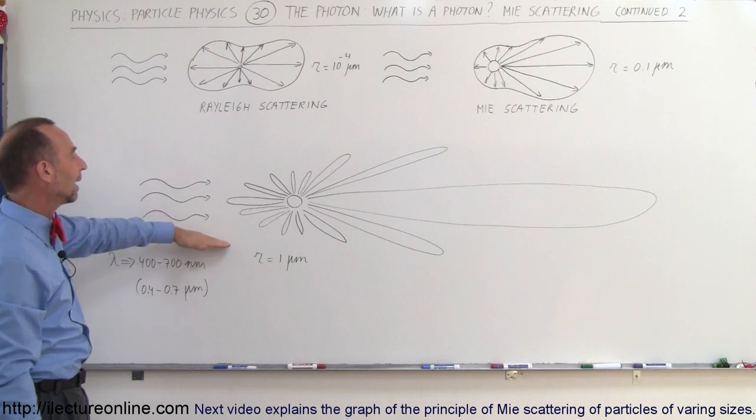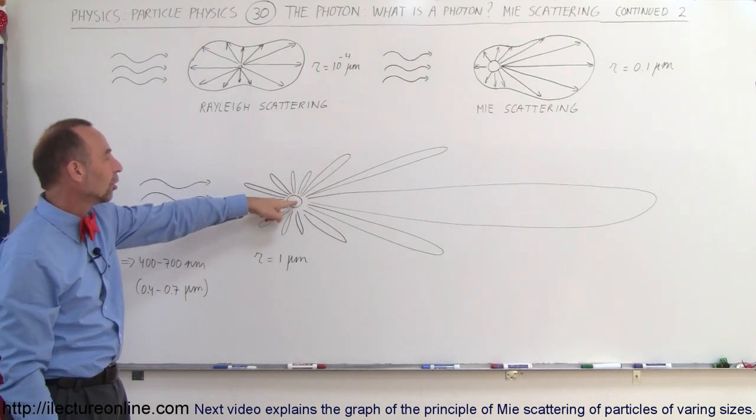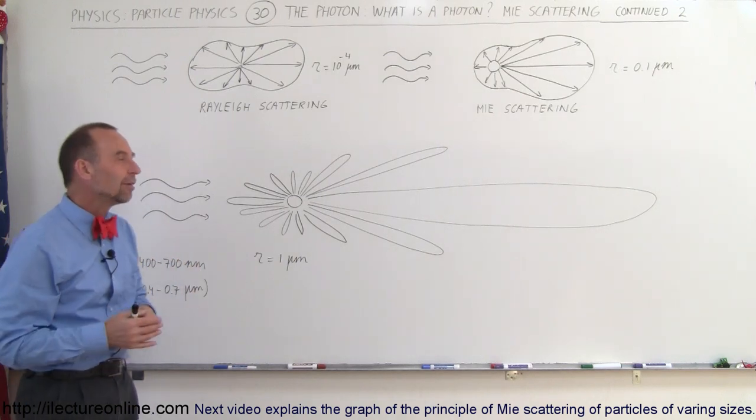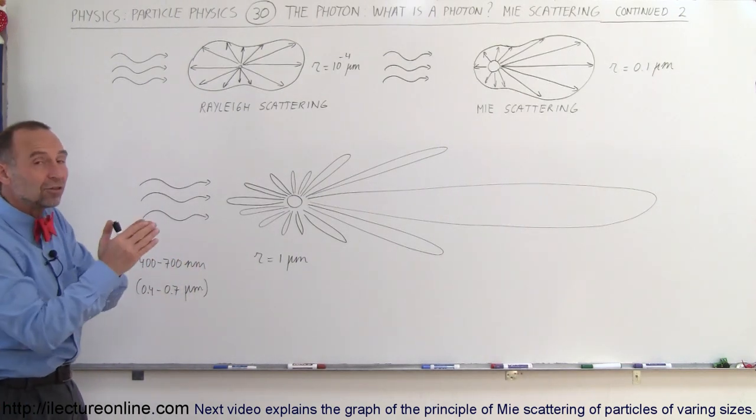Again, that happens at particle sizes that are larger than the incoming photons. And we'll give you a little bit more idea of how that really works. So don't imagine that the scattering is the same in all directions or that it's uniform in all directions.